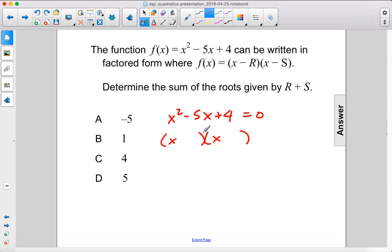4 times 1 gives us 4. Negative 4 minus 1 gives us negative 5. So we're going to have 2 negative signs. x minus 4 times x minus 1 equals 0.